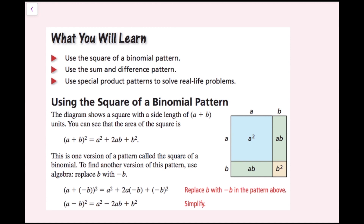The diagram shows a square with a side length of a plus b units. You can see that the area of the square is going to be a plus b quantity squared. And this simplifies to a squared plus 2ab plus b squared. We have a times a, which is a squared; a times b, which gives us rectangle ab; and again a times b, that's ab; and then b times b, which is b squared.